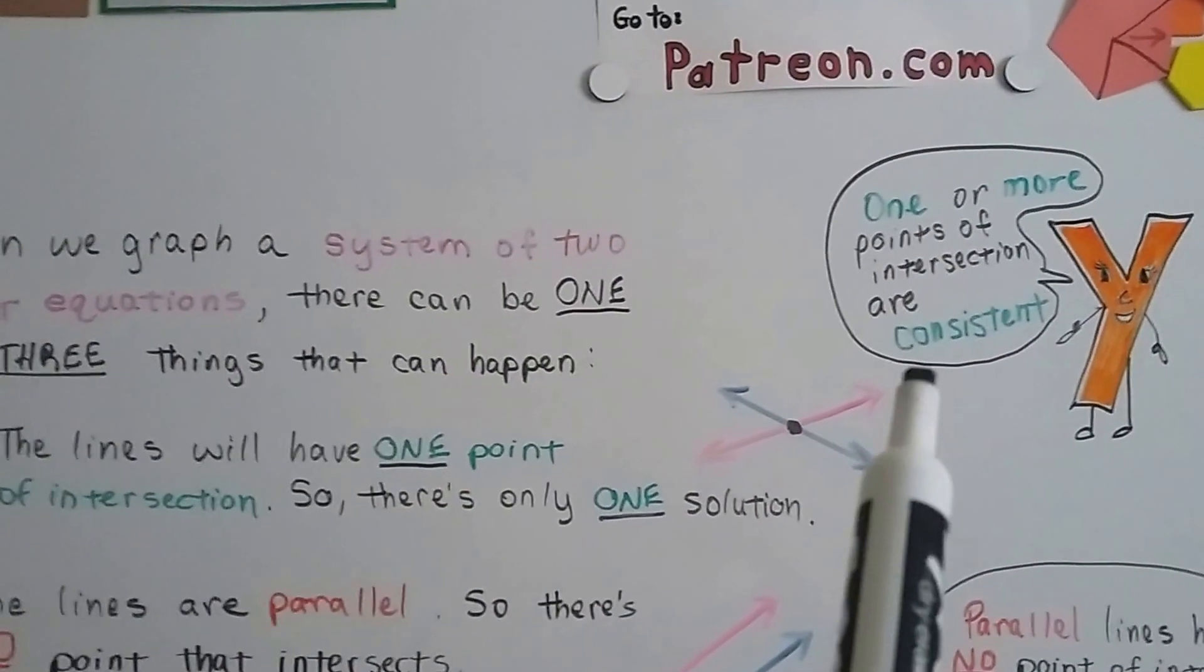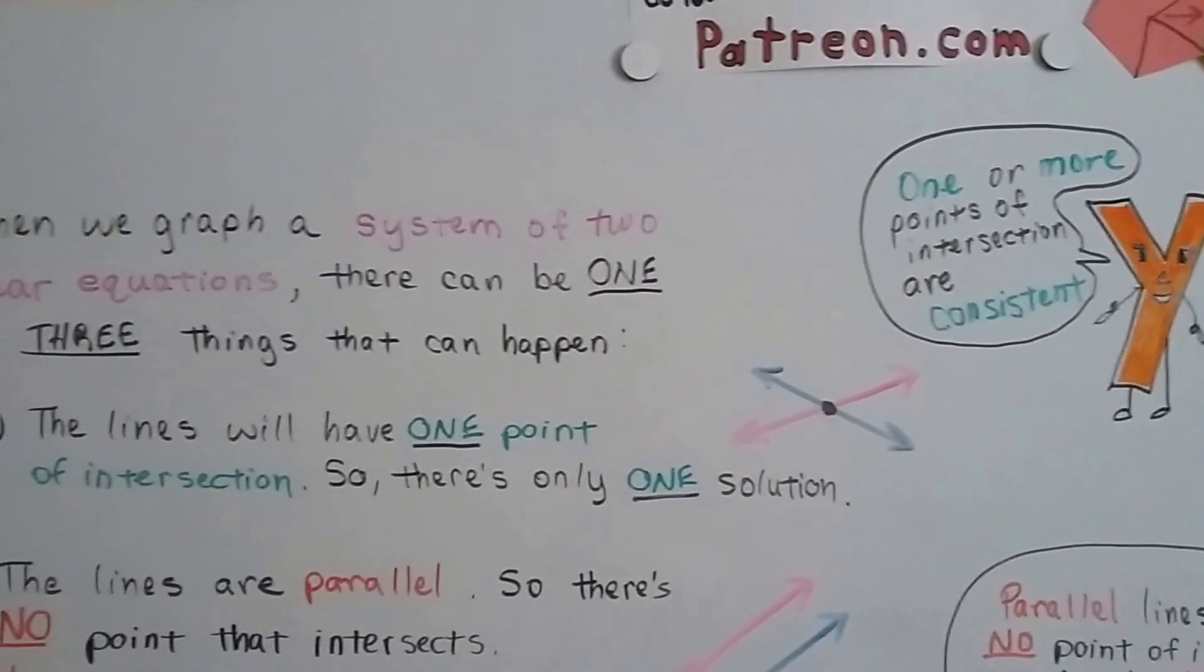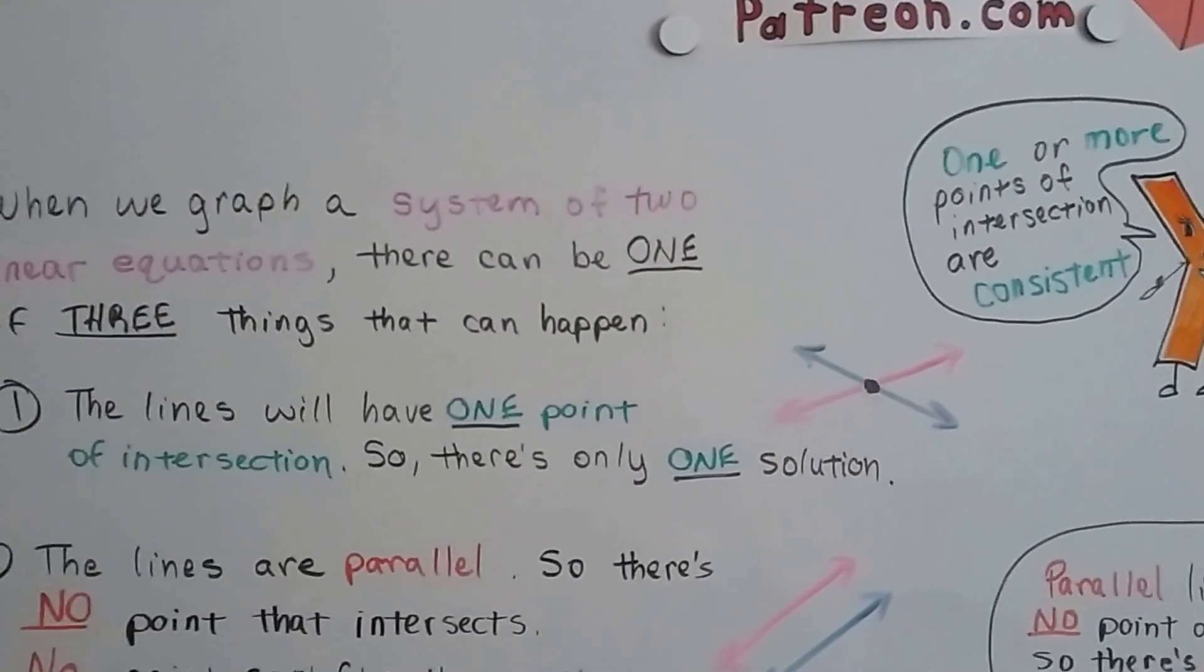Well, those are called consistent. Because there's one or more points of intersection.